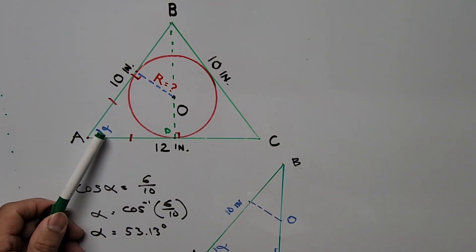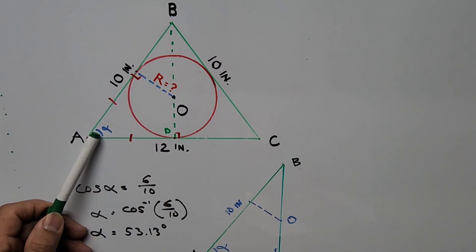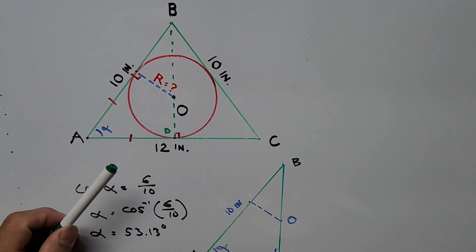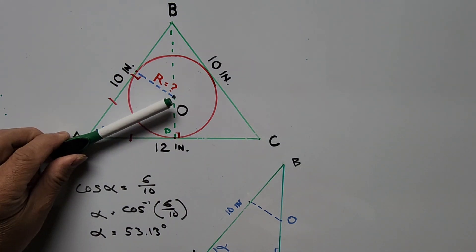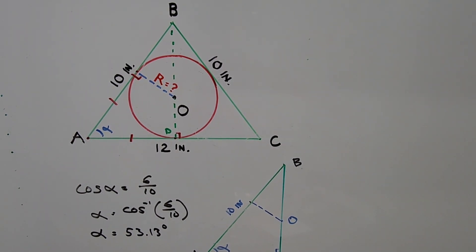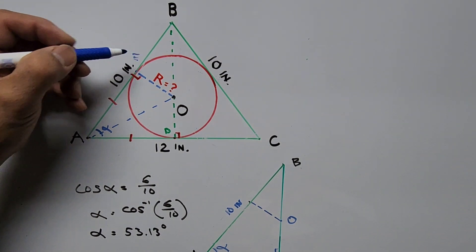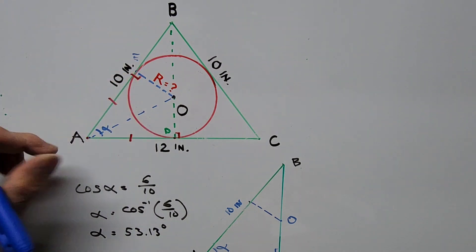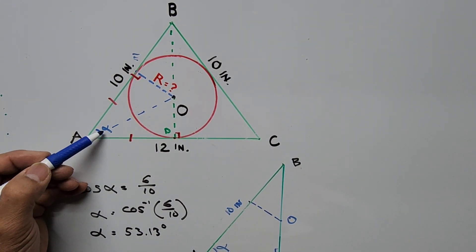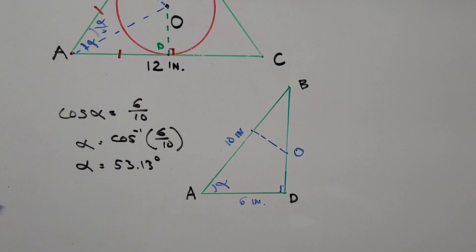Since the two tangent segments from point A are equal in length, if we project a line from point A to point O, that segment would be a bisector of angle alpha. So we form a new triangle by taking half of this area, with half of angle alpha. We designate this new tangent point as point E, and since we already calculated alpha as 53.13 degrees, the new triangle will have angle alpha divided by 2.